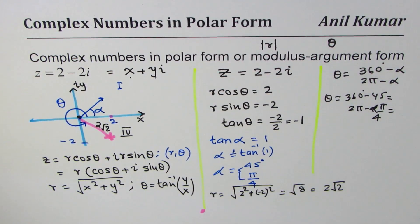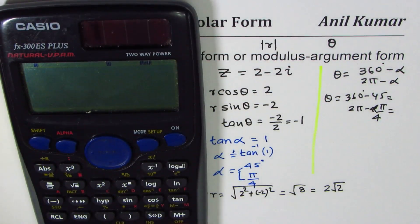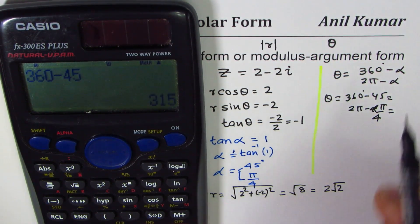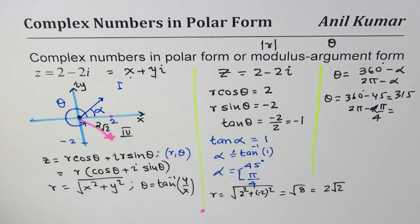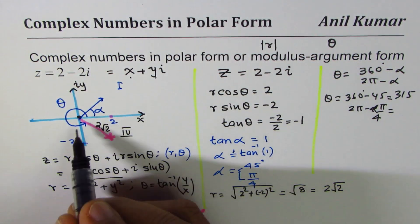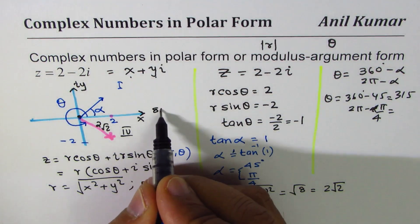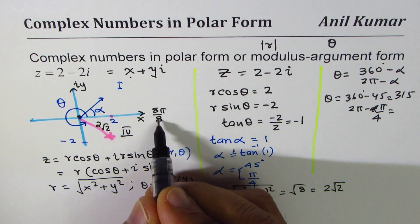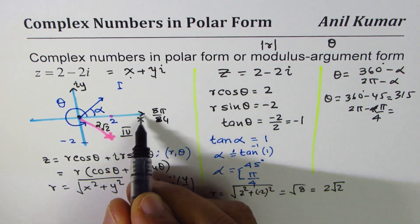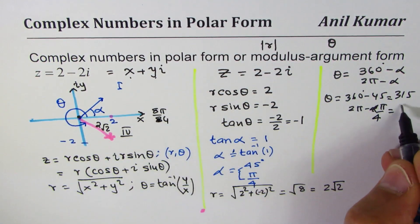So let's use the calculator. So we got 360 minus 45 that gives you 315, and 2 pi minus pi by 4. So if you go pi by 4, easy way is 2 pi is 8 pi over 4, so 1 less than 8 pi is 7 pi by 4.